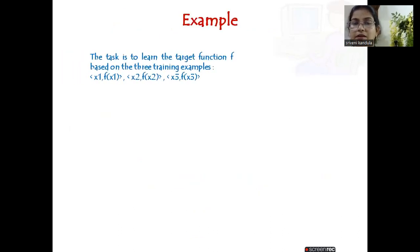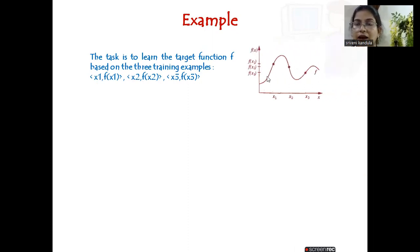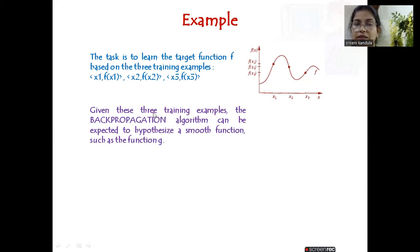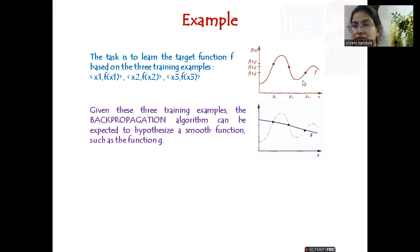Let us consider the task of learning a target function f based on training examples (x1, f(x1)), (x2, f(x2)), (x3, f(x3)), where x1, x2, x3 are real values. The function f is shown here as the output obtained. When these three training examples are given to the back propagation algorithm, it will try to give us a smooth function — connecting all these points to generate a function g.